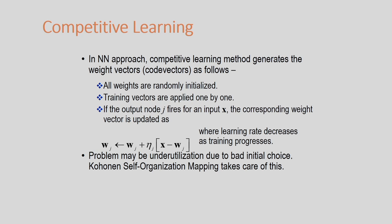The updation rule is: w_j* = w_j + η·(x − w_j), where w_j* is the new weight, w_j is the old weight, η is the learning rate, and (x − w_j) is the learning vector. I have to determine which is the winning neuron corresponding to a particular input x, and the winning neuron is updated using this updation rule.